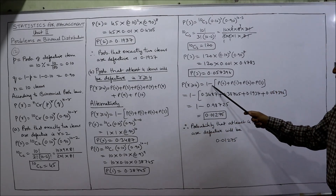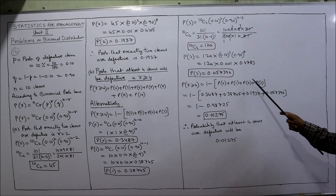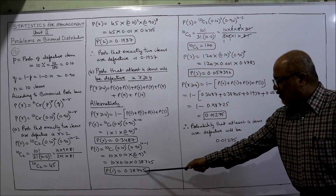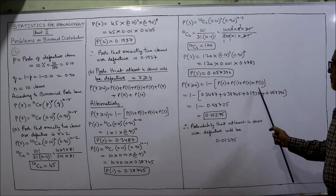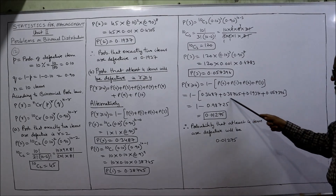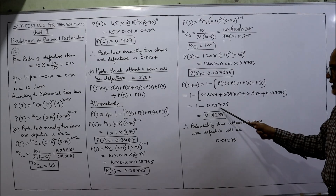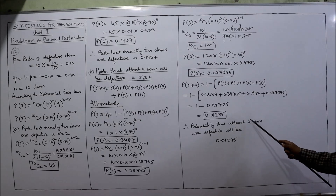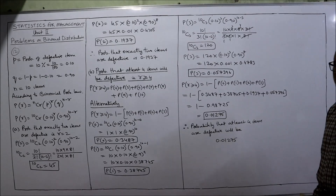Now applying the formula: P(R ≥ 4) = 1 − [P(0) + P(1) + P(2) + P(3)] = 1 − [0.3487 + 0.38745 + 0.1937 + 0.057396] = 1 − 0.98725 = 0.01275. So the probability that at least 4 items are defective is 0.01275.